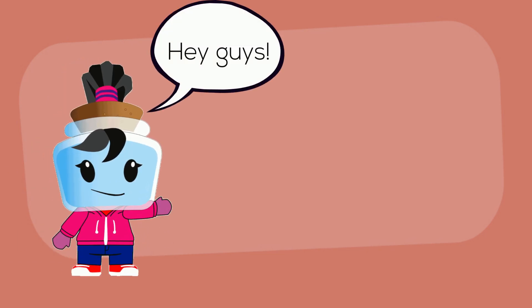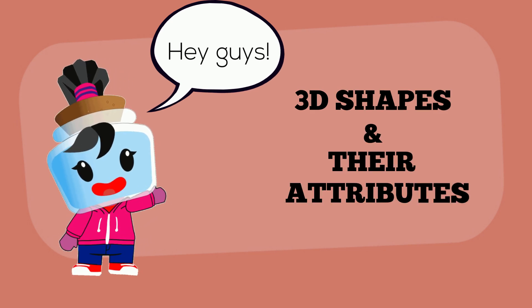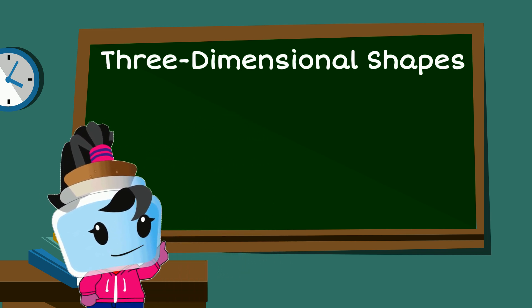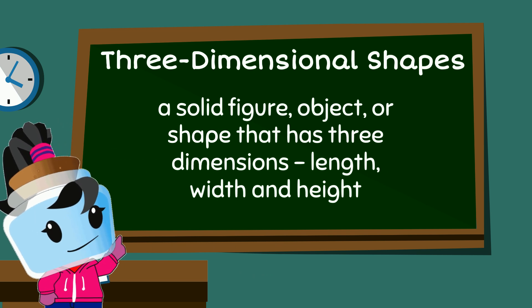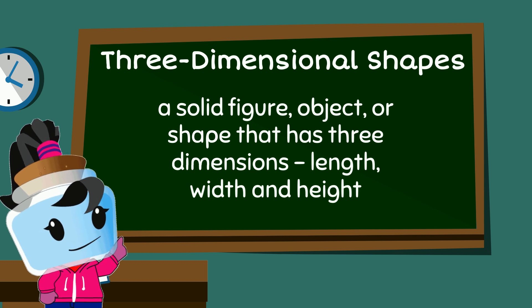Hey guys, today we will be learning about 3D shapes and their attributes. A 3D shape or a three-dimensional shape can be defined as a solid figure or an object or shape that has three dimensions: length, width, and height.